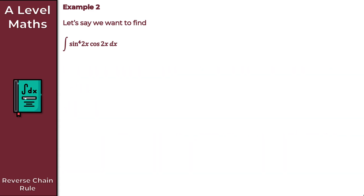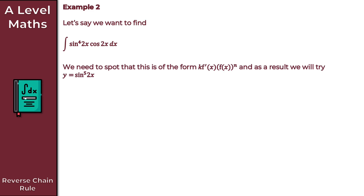Moving on to example 2. This integral looks quite complicated, but by the reverse chain rule it's actually not too bad. To begin with, we need to spot what form our integrand takes. Hopefully you recognize that our integrand is of the form k times f prime of x times f of x to the n, and as a result we will try y equals sine to the 5 of 2x.